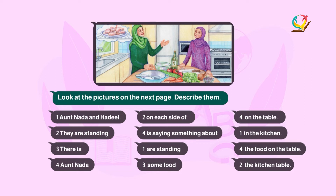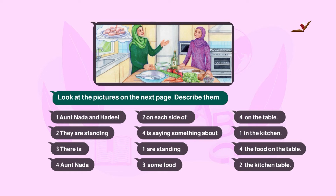number two: They are standing on each side of the kitchen table — واقفين على جانب كل من طاولة المطبخ. number three: There is some food on the table — يوجد بعض الطعام على الطاولة. number four: Aren't Nada is saying something about the food on the table — نادا تبدو أنها تتكلم عن الطعام الموجود أمامها.